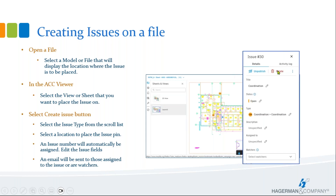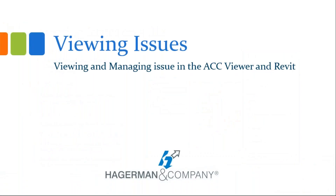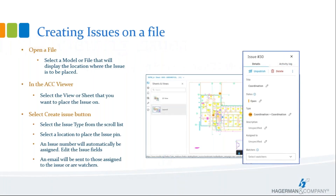By default, your issues are unpublished. Unpublished issues are only viewable by the creator, the watchers, and those the issues have been assigned to. If the issue is published, more people can see the issue; however, who those individuals are will be determined by the permissions assigned by the project admin. The default is you can only see what's been assigned to you or that you've created.